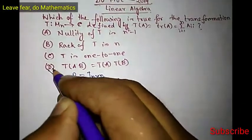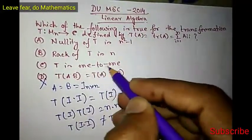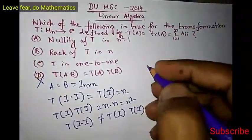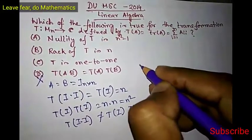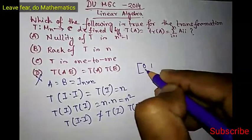Now, is T one-to-one? To simplify this problem, take n equals 2. So take two 2 by 2 matrices.